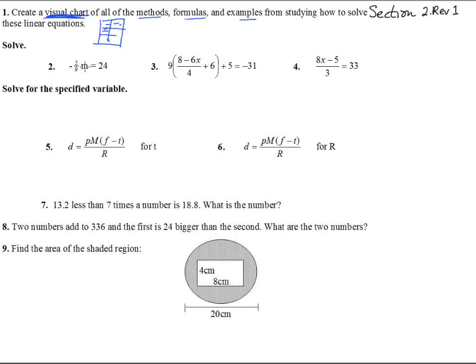Negative 2 ninths m equals 24. We can just divide by this negative 2 ninths, which is the same as timesing by negative 9 halves. And if you punch that into your calculator, you get negative 108.